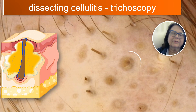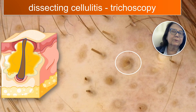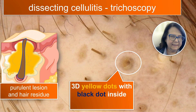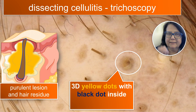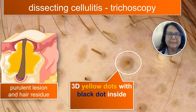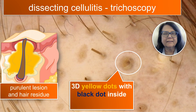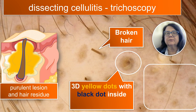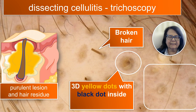In trichoscopy, the most typical finding is the so-called big 3D yellow dot with a black dot inside. This is the effect of the cyst or nodule under the skin surface with a hair shaft which was broken and destroyed because of the inflammatory process. The remainders of the hair shaft appear as a black dot. However, the hair shafts are usually not completely destroyed — they keep growing, appearing as broken hairs on the periphery of the active lesion. There will also be areas with no hairs but covered with yellow dots, meaning there are still hair follicles and this is still a reversible phase of the disease.